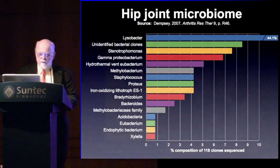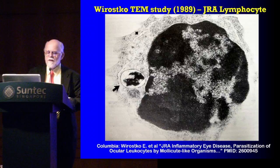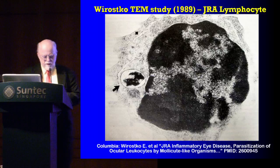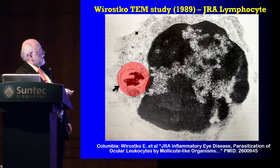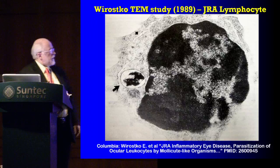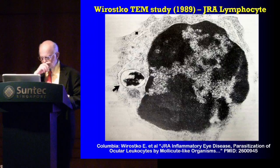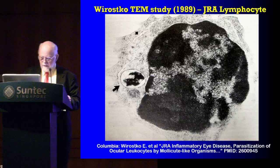If we look at studies showing intracellular microbial artifacts, this 1989 study from Wueroskos's group at Columbia University used transmission electron microscopy and staining to identify communities of microbes — staining as microbes but living within the cytoplasm. These are phagocytic cells; this was a lymphocyte taken from the eye of a juvenile rheumatoid arthritis patient. The Columbia studies also looked at Crohn's and sarcoidosis.